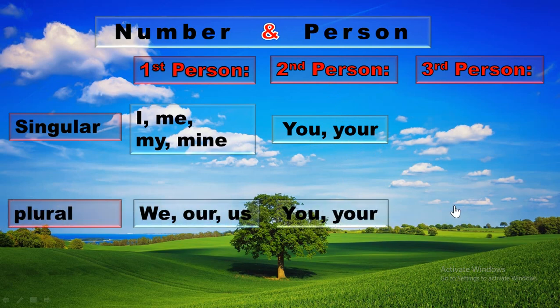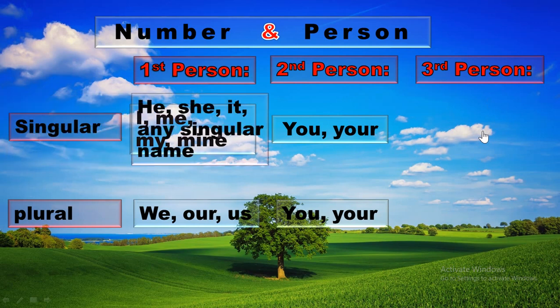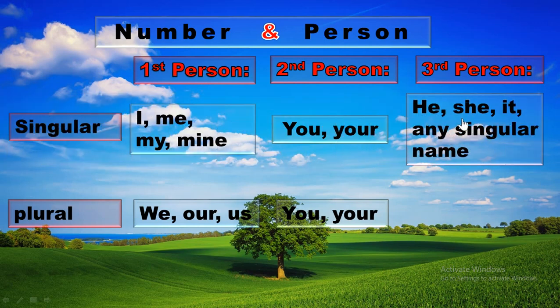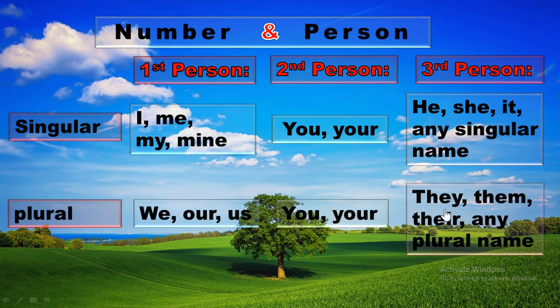In third person, the singular words are he, she, it, or any other singular name. In third person plural, the words are they, them, their, and any other plural name. I hope you got this.